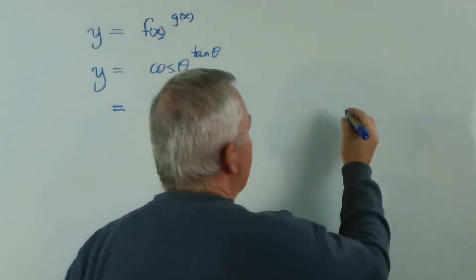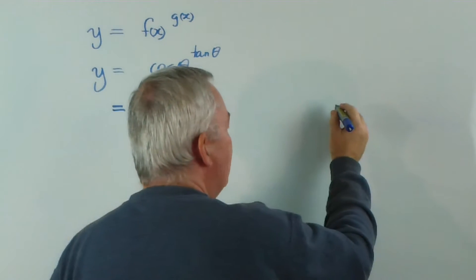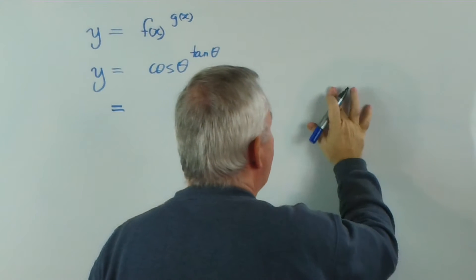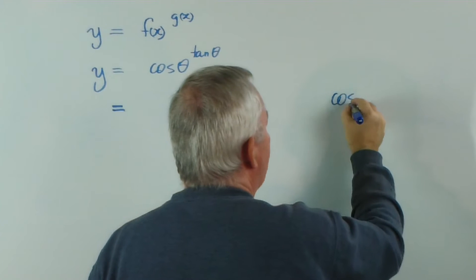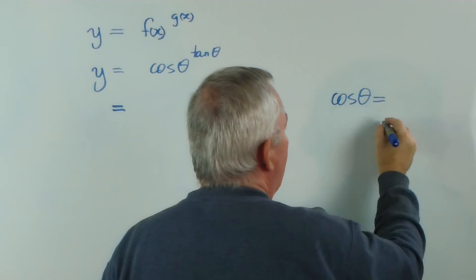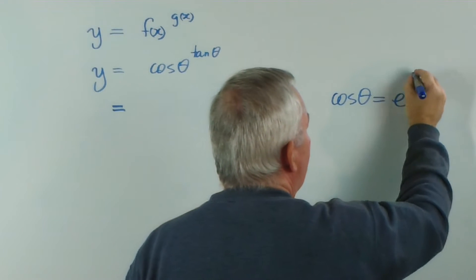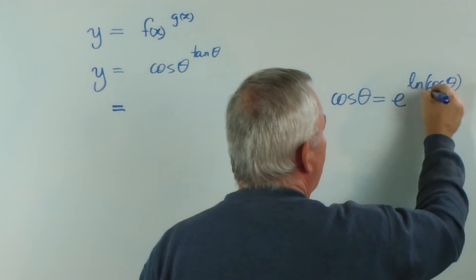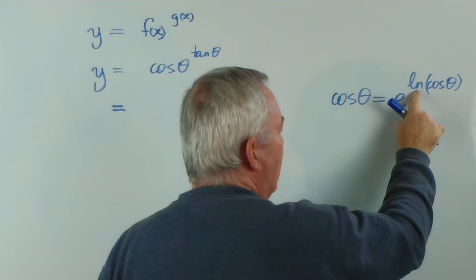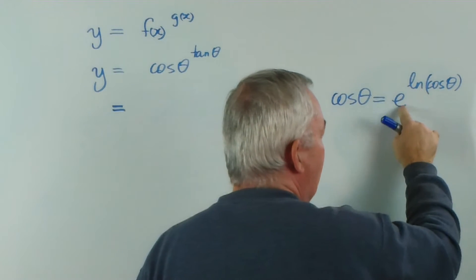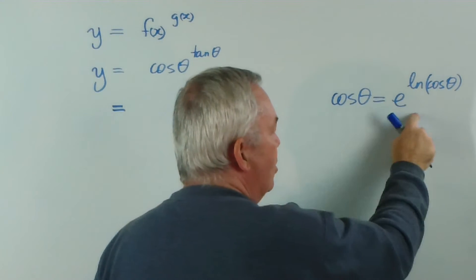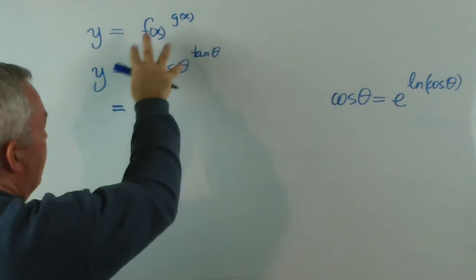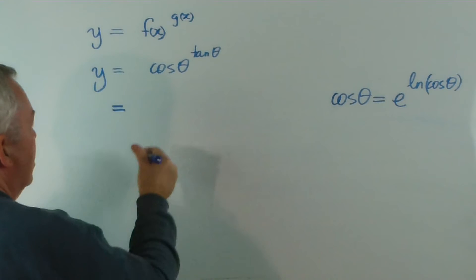So, it means this: that if they undo each other — I'll talk about cosine of θ — the cosine of θ is equal to e to the log of the cosine of θ. That exponential undoes the logarithm, if you like. The inverse functions. Those two expressions are the same, and that's the key that allows us to solve this.